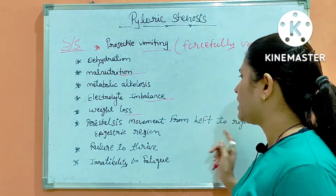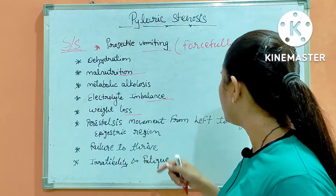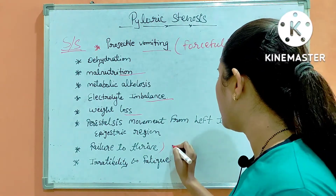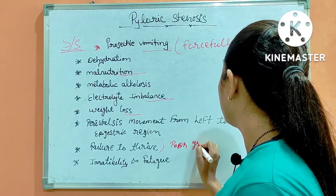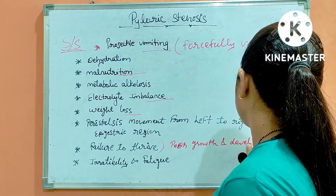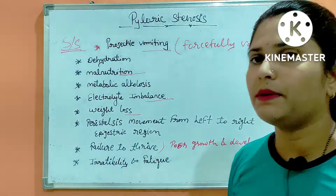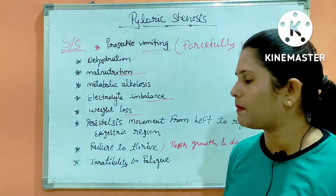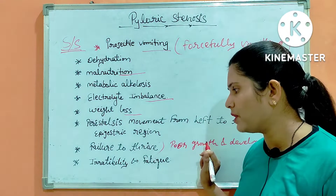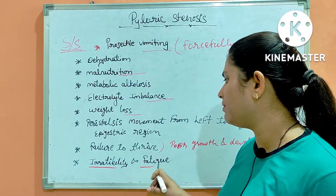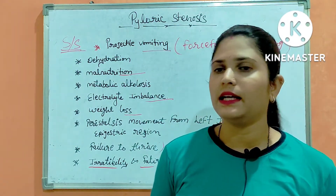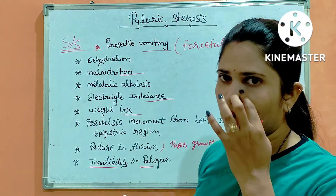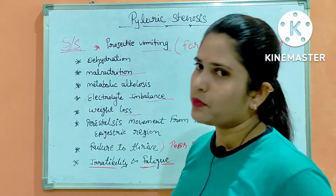Peristalsis movement is visible from left to right in the epigastric region. Next is failure to thrive, meaning poor growth and development. Because food and supplementary nutrition are not absorbed properly, the growth and development of the baby is poor. Finally, irritability and fatigue — the baby feels irritated due to the disease condition and its many symptoms, leading to fatigue.